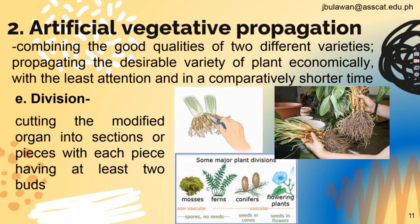Letter E: division involves cutting the modified organ into sections or pieces, with each piece having at least 2 buds. If you have 2 buds, you need to cut and divide them, then replant in another pot.